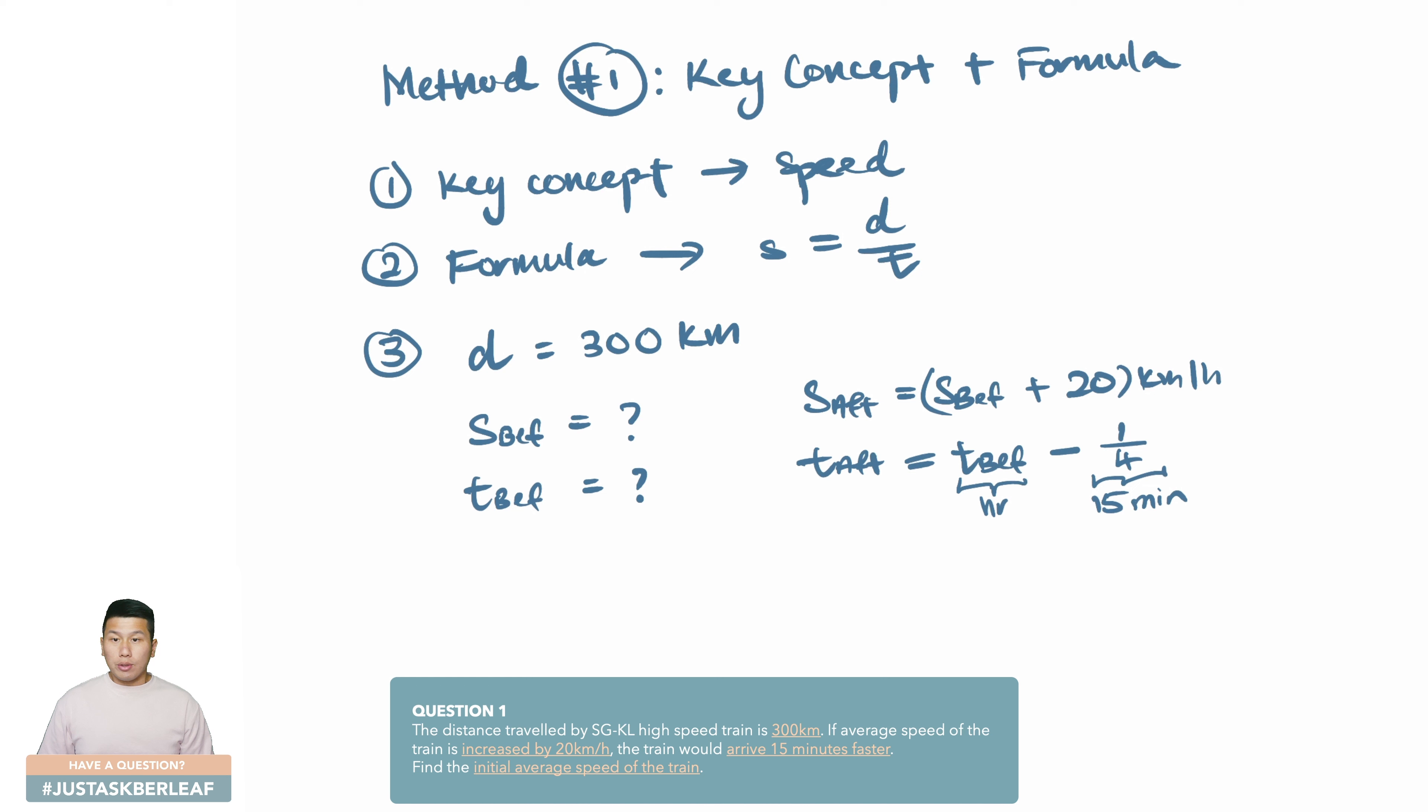As for the time after, t af, it is actually a time before minus, because it is actually shorter, and since this is in hours, therefore the time before here is actually in hours as well. So I would write this as one quarter because that is 15 minutes. The formula itself is a good starting point for us to identify the connecting factor.